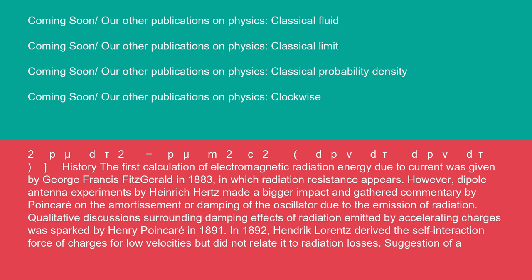History: the first calculation of electromagnetic radiation energy due to current was given by George Francis Fitzgerald in 1883, in which radiation resistance appears. However, dipole antenna experiments by Heinrich Hertz made a bigger impact and gathered commentary by Poincaré on the amortissement or damping of the oscillator due to the emission of radiation. Qualitative discussion surrounding damping effects of radiation emitted by accelerating charges was sparked by Henri Poincaré in 1891.